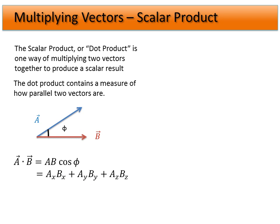So we have two different forms that give us exactly the same answer, but they are used in different ways and different problems are easier to solve using one or the other. The result is always a scalar — it's something you always want to remember. We lose the vector part of it; we lose the direction once we do a dot product.